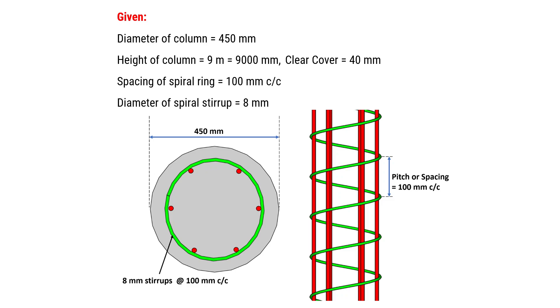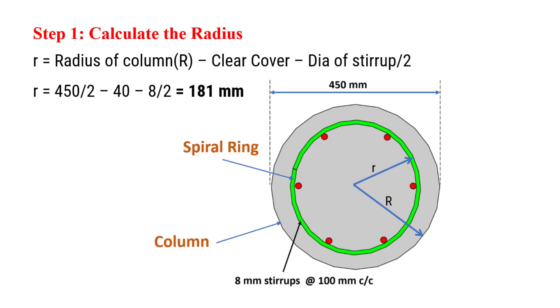Let's move on to the calculation part. First, we calculate the radius of spiral which is equal to the radius of column, excluding the clear cover and half the diameter of the spiral stirrup. That's radius of column minus clear cover minus diameter of stirrup divided by 2.